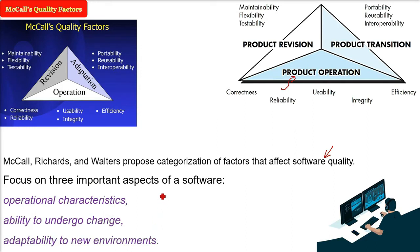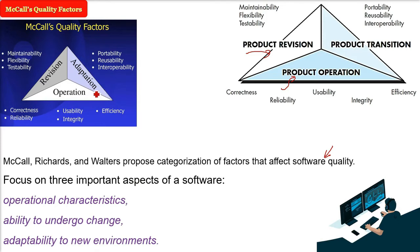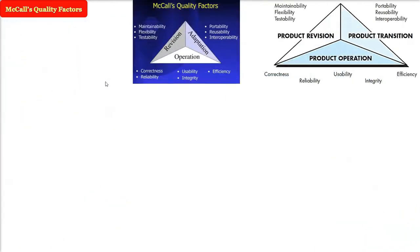All of these major categories have underlying different attributes. This is the McCall quality factor triangle. In product operation, we have certain factors. In revision, we have certain factors, and in product transition, these are certain factors. All these factors were defined by McCall.